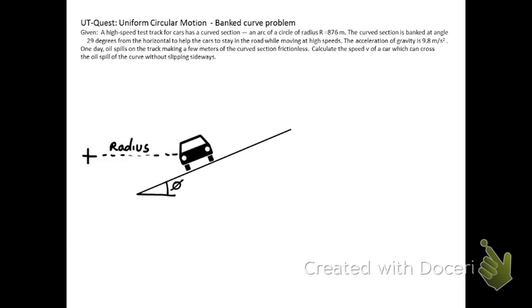Okay, AP Physics, UT Quest Problem, Uniform Circular Motion. This is a banked curve problem. Banked curve problems are a classic physics problem.